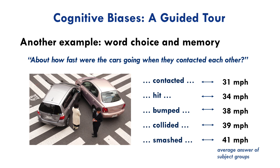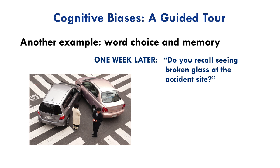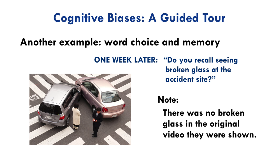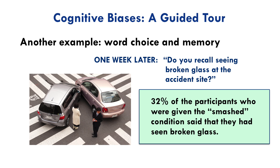This effect can even be used to implant memories of events that never occurred. In the experiment we've been talking about, subjects were interviewed a week after watching the video. One of the questions asked was: do you recall seeing broken glass at the accident site? Now in the original video there was no broken glass, so the correct answer is no. But almost a third of the participants who were given the 'smashed' condition said they had seen broken glass. That fraction increased with the force of the contact verb used, reaching its peak at 32% for those initially asked how fast the cars were going when they smashed into one another.